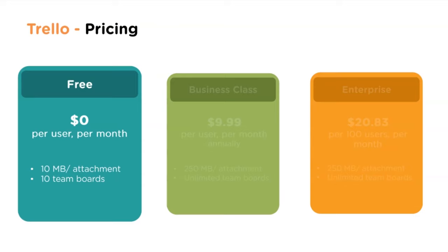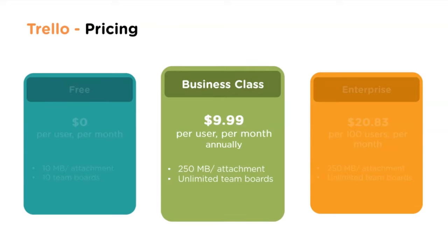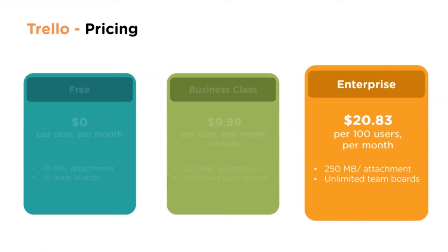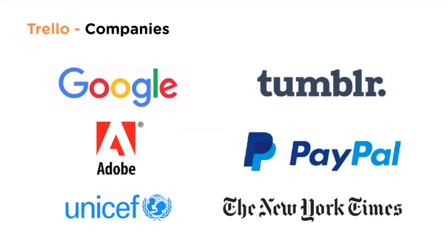Trello pricing: the free tier allows 10 MB per attachment and 10 team boards. Business Class includes 250 MB attachments and unlimited team boards at $9.99 per user per month billed annually. The enterprise version provides 250 MB for attachments and unlimited team boards at $20.83 for 100 users per month. Companies using Trello include Google, Adobe, PayPal, UNICEF, and The New York Times.